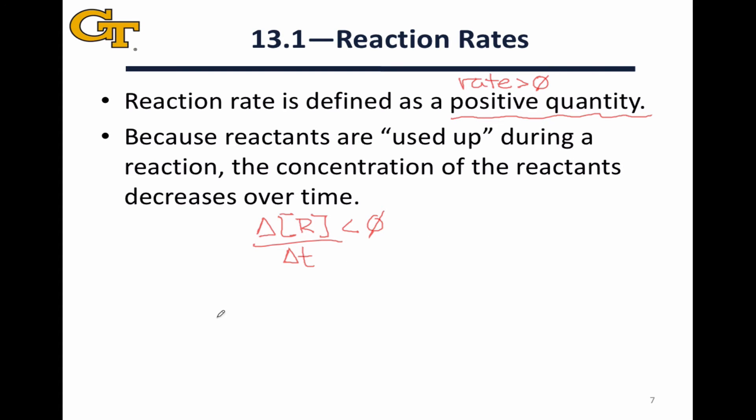So to get around that problem, we define the reaction rate in terms of reactants using a negative sign. We essentially multiply that delta R divided by delta t by negative one to ensure that it's positive.